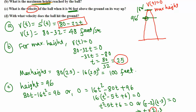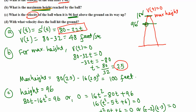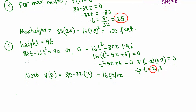In part D, we need to find the velocity with which the ball hits the ground. When the ball hits the ground, the height is zero. So we set the height function equal to zero: 80t minus 16t squared equals 0. We solve for t to find when the ball reaches the ground, then plug that time into the velocity function.